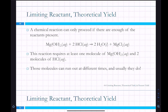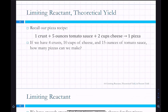Sometimes this is done on purpose — by adding more of one reactant, it makes it easier to use up the other. In industrial processes, they'll often use a lot of the cheap reactant to ensure they use up the more expensive one. Going back to the pizza example: if we have four crusts, ten cups of cheese, and fifteen ounces of tomato sauce — how many complete pizzas can we make? A hot dog analogy also works: you can buy ten hot dogs but buns only come in packs of eight, so you always end up with a bad ratio.